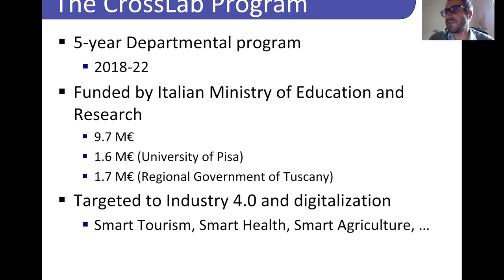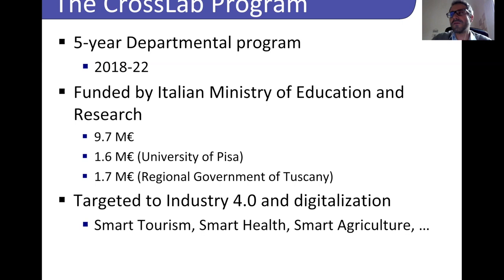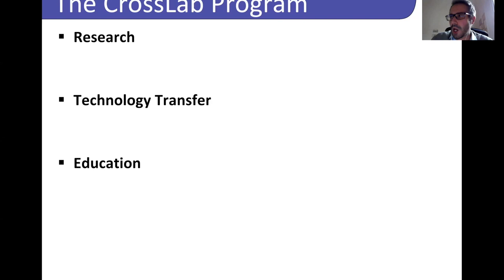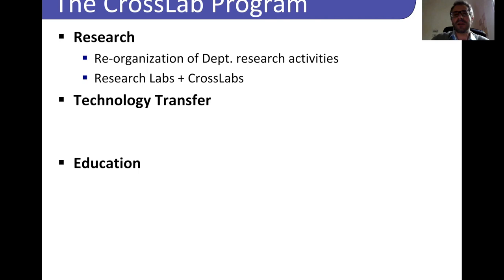The project was funded by the Italian Ministry of Education and Research with almost 10 million euros in grant. The target is to reorganize the internal organization of our department to foster Industry 4.0 research activities and related areas such as smart tourism, smart health, and smart agriculture. The CrossLab project aims at three main pillars: research, technology transfer, and education. The research pillar aims at creating five multidisciplinary laboratories named CrossLabs.